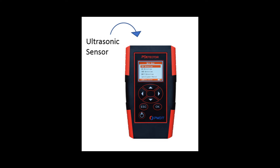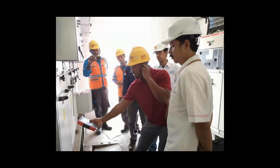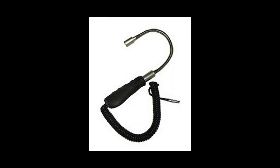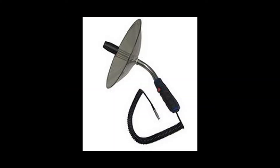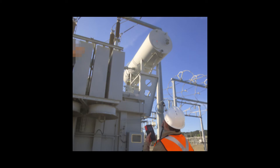The P-Detector employs three ultrasonic sensors: an internal sensor built into the main unit, an extension wand, and a parabolic dish. These three sensors are used to detect the vibration phenomenon of the ultrasonic signal spreading through air. It is mainly used for PD detection for electrical equipment which has passages with the air, such as switchgear and outdoor electrical equipment. It can convert the ultrasonic signals into audible sound through heterodyne techniques, and is best used to determine the existence of the PD as well as the location through listening to the signal's characteristic sounds.